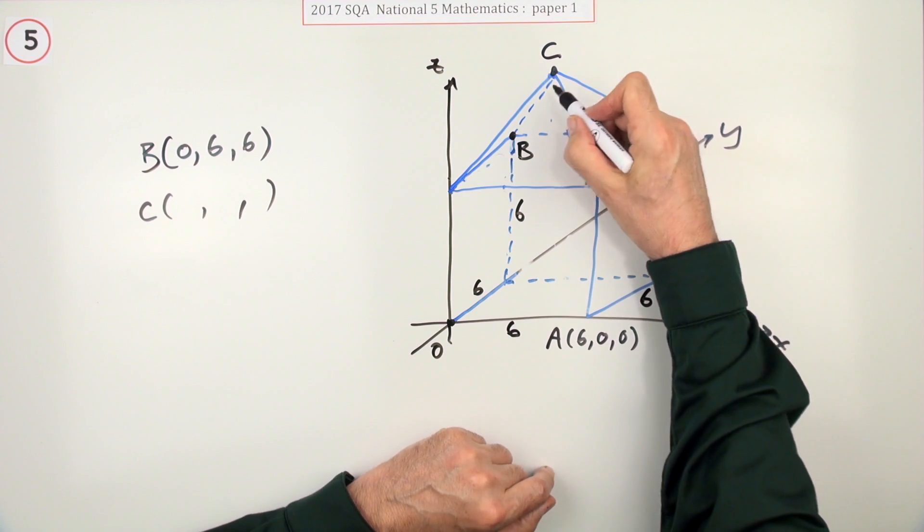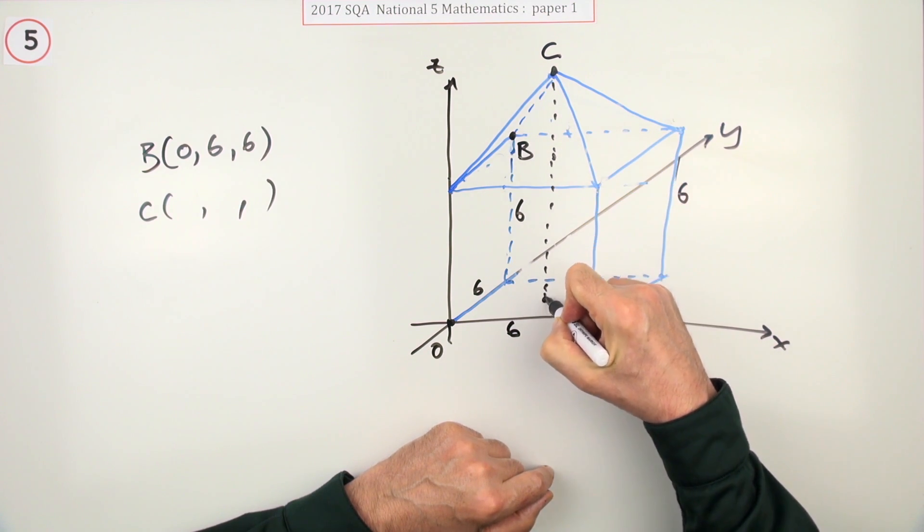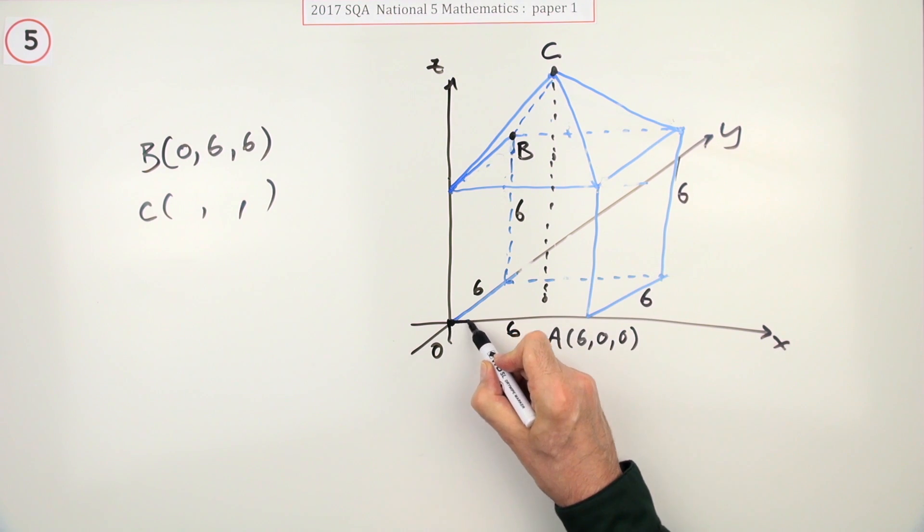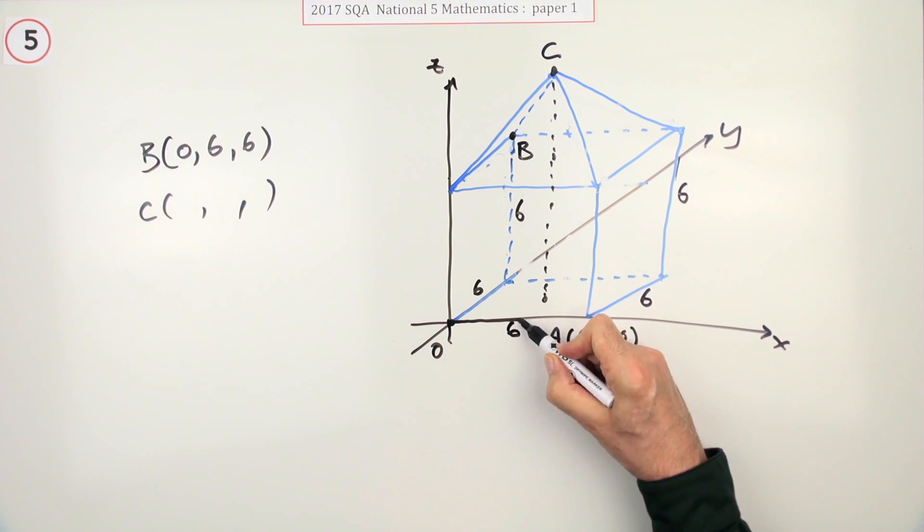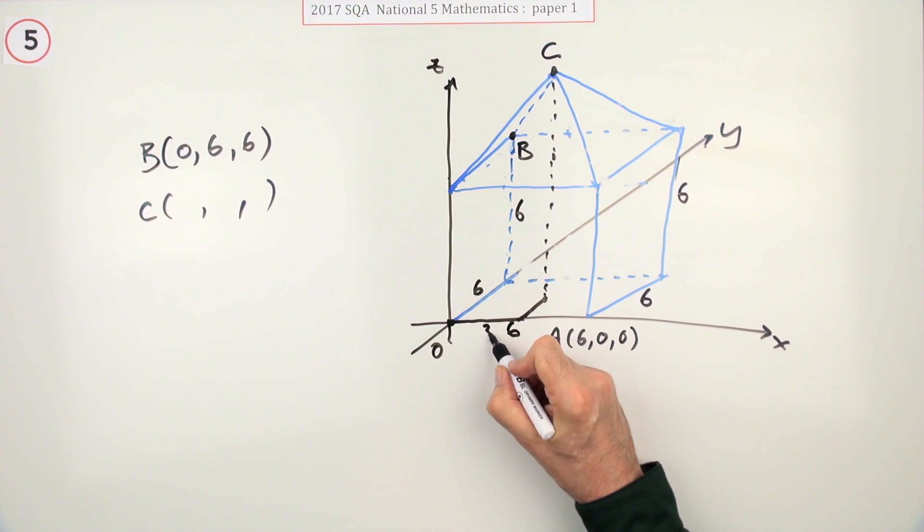Now C is directly above the center of the base, so the way to get to C is go halfway along, go halfway back, and then go all the way up to the top.